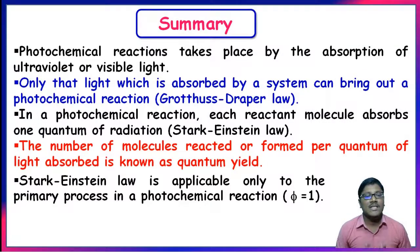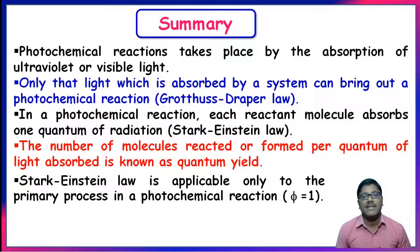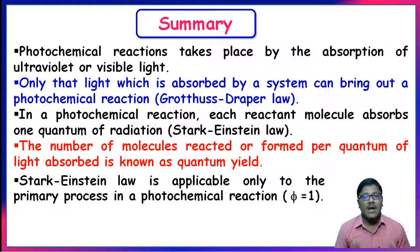Summary: photochemical reactions take place by the absorption of ultraviolet or visible light. According to Grotthuss-Draper's law, only light absorbed by a system can bring about a photochemical reaction. According to Stark-Einstein's law, each reactant molecule absorbs one quantum of radiation. The number of molecules reacted or formed per quantum of light absorbed is known as quantum yield or quantum efficiency. Stark-Einstein's law applies only to the primary process (φ = 1) and not to secondary photochemical processes.